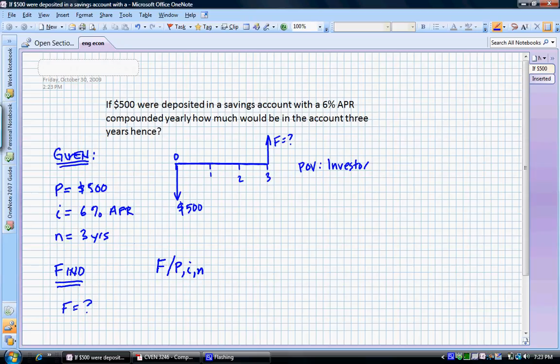Remember, also, the equation that goes along with F slash P is F is equal to P times one plus I to the N. And for this problem, we just simply say $500 times one plus 0.06 to the three.